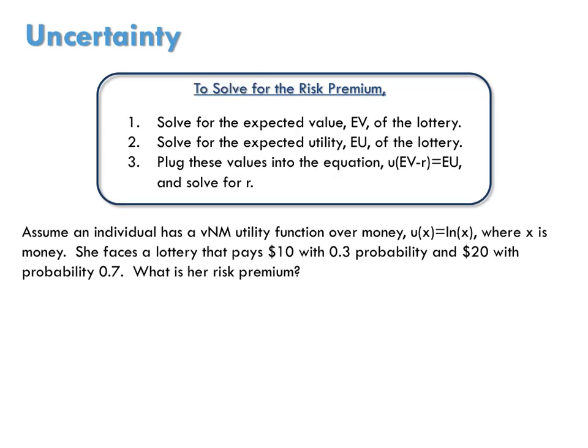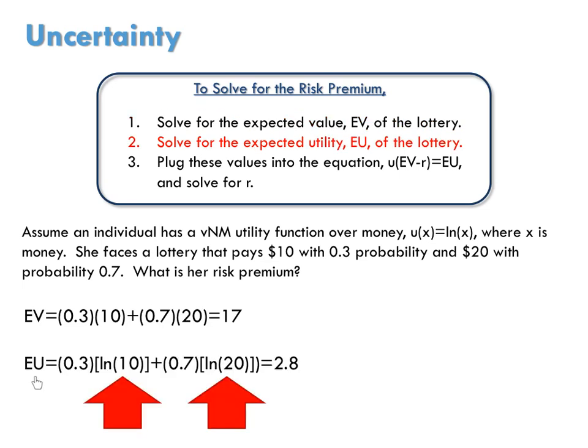Here's an example. Assume an individual has a VNM utility function over money, U equals the log of X, where X is money. She faces a lottery that pays $10 with 0.3 or 30% probability and $20 with probability 0.7 or 70%. What is her risk premium? First, we calculate the expected value as a weighted average of these two cash prizes, the weights being their probabilities, to get an expected value of $17. Next, we calculate the expected utility of this lottery, weighting the utility that the person would get from each of the cash prizes, for an expected utility of 2.8 utils.